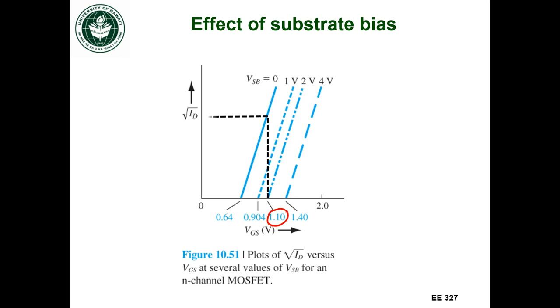I would just follow that point up until it intersects this curve here, and then go to the left, and that's going to tell you the value of the square root of the drain current. That's if I had my source and body terminals connected together. So no source to body voltage, no substrate bias effect.